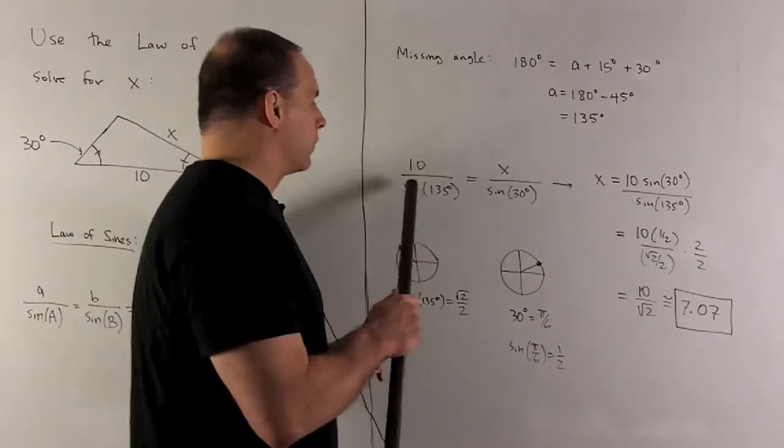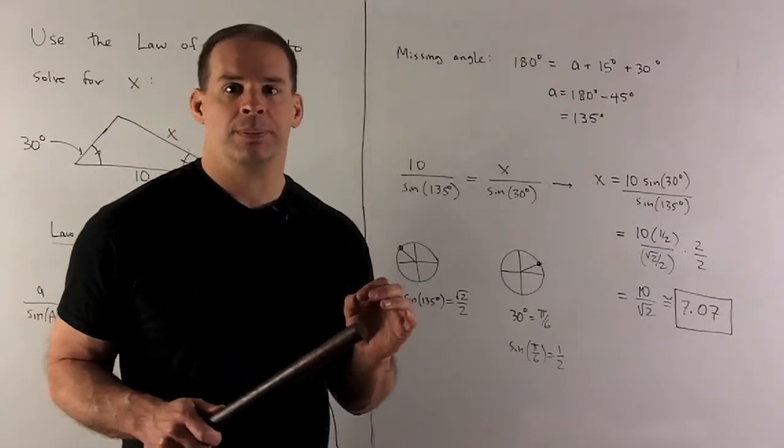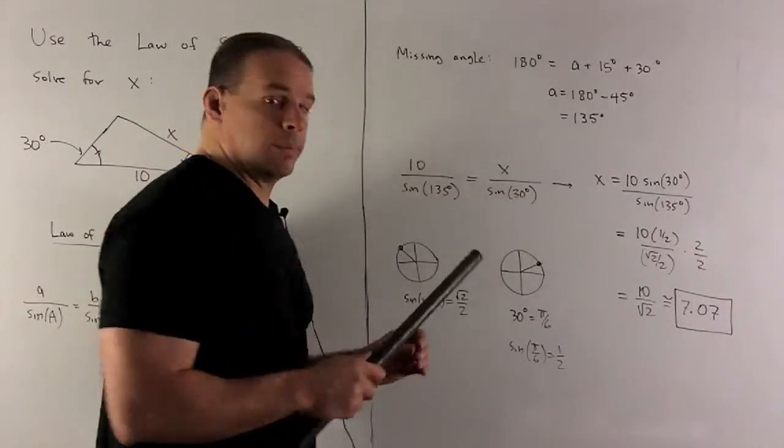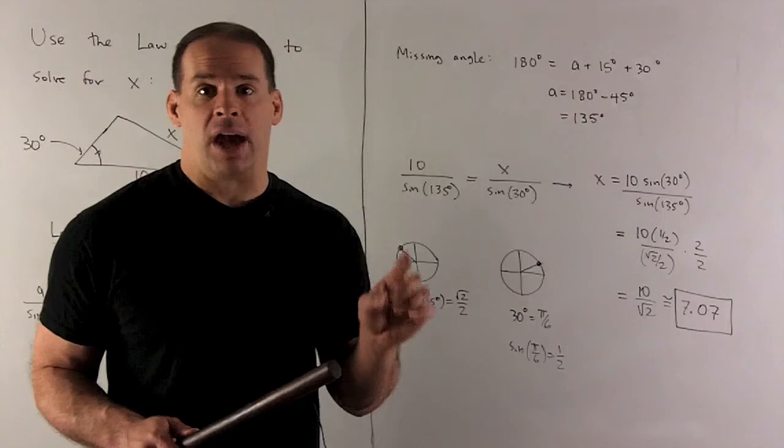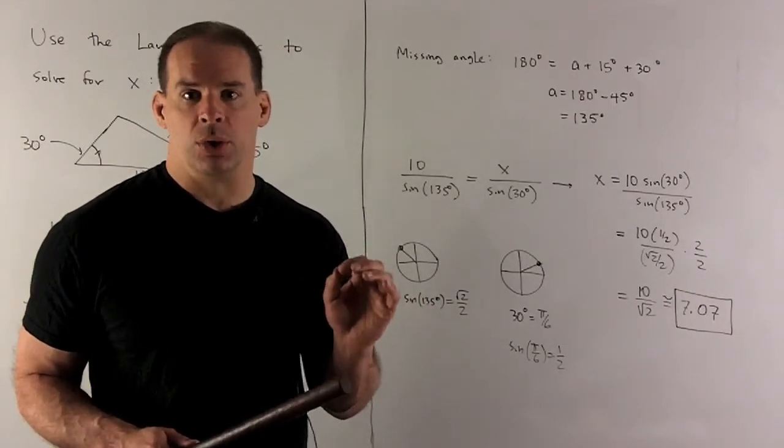First, 135 degrees in radians is a multiple of pi-fourths. That's in the second quadrant. In the second quadrant, the sine, which is the Y value in the unit circle, is positive. So here we're going to get square root of 2 over 2.